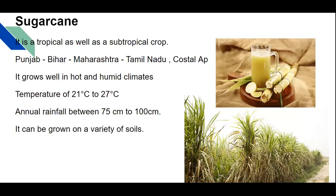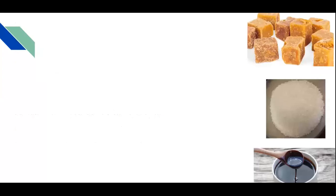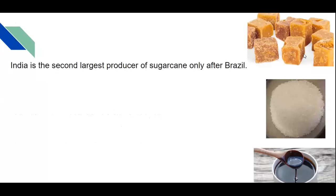When we look at sugarcane cultivation, it is mainly labor intensive — you can say it needs manual labor from sowing to harvesting, which is not possible with machines. So it creates more manual work. The uses of sugarcane include producing different kinds of food items.